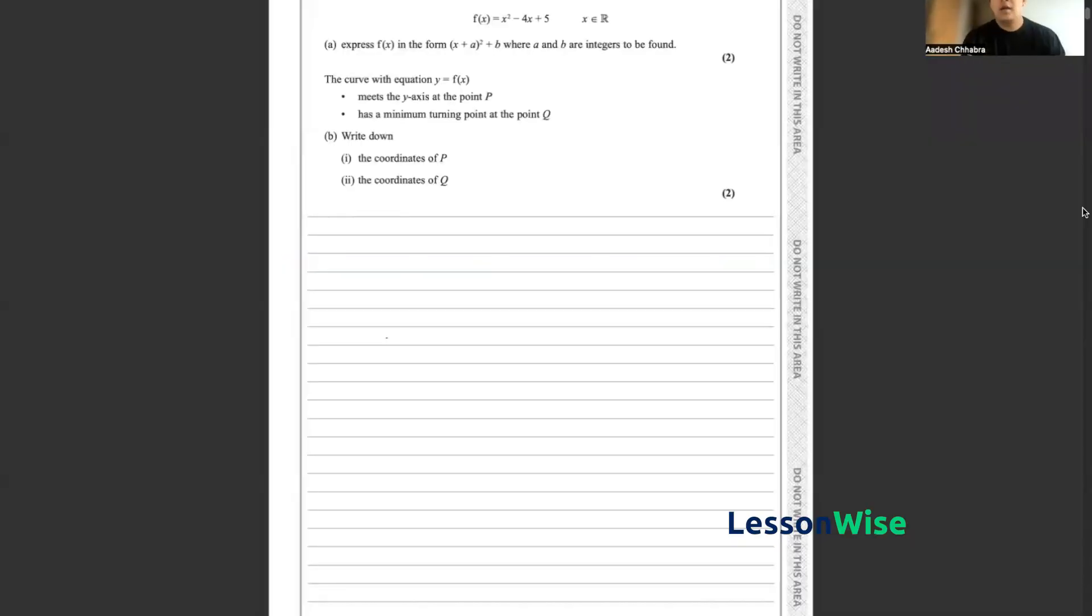So the second question has given us a standard quadratic function f(x) = x² - 4x + 5. In part a we have been asked to express this function in the form (x + a)² + b, where a and b are integers to be found.